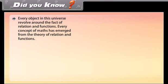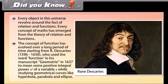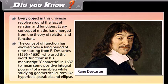Did you know? Every object in this universe revolves around the fact of relation and functions. Every concept of math has emerged from the theory of relation and functions. The concept of function has evolved over a long period of time, starting from R. Descartes (1596–1650), who used the word function in his manuscript Geometry in 1637 to mean some positive integral power xⁿ of a variable x, while studying geometrical curves like hyperbola, parabola, and ellipse.